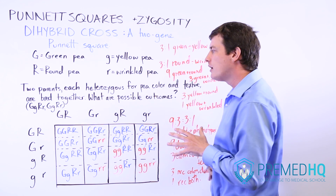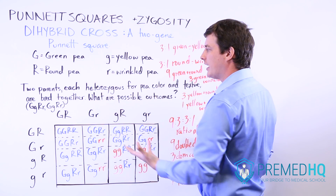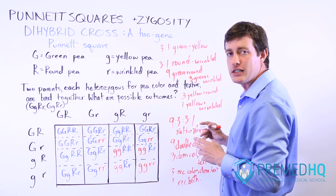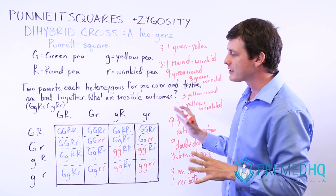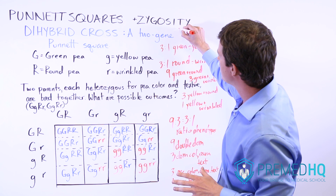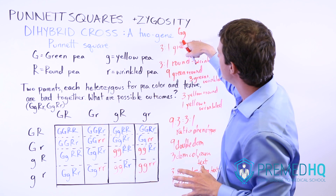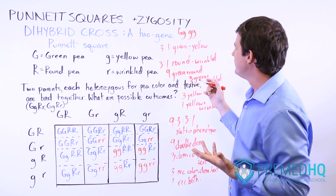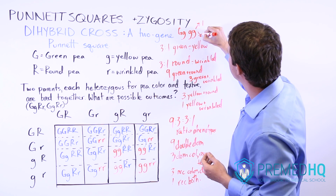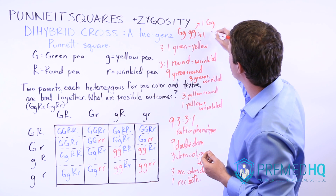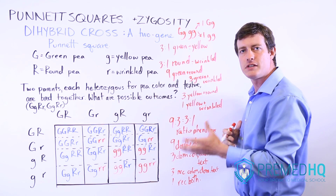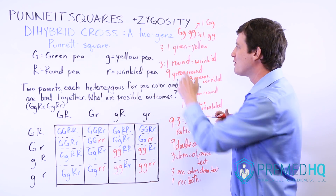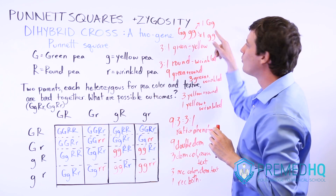This is important because you're not always going to have both parents as heterozygotes, so it won't always be a 9-3-3-1 ratio. For example, if one parent was homozygous dominant GG and the other was homozygous recessive, the Punnett square would give a one-to-one ratio of capital G lowercase g versus lowercase g lowercase g — a 50% chance of being yellow versus green. So rather than multiplying a three-to-one ratio, you'd use a one-to-one ratio and multiply those.